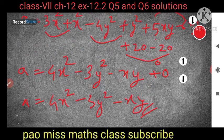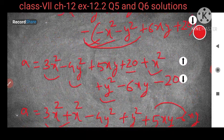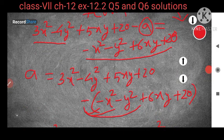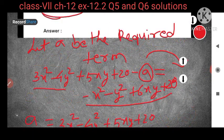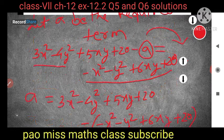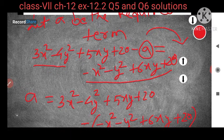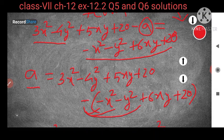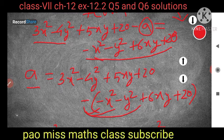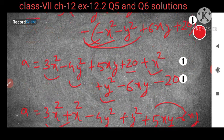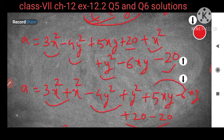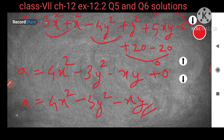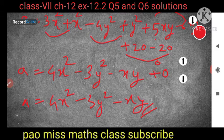Now I will show the previous one also — just you can see this. If you have not written, you can take a screenshot and write it down. So first, let a be the required term. Then from the given term you subtract a, keep a on the left hand side and the other term on the right hand side. This term becomes minus with the first expression. After that you break the bracket, then collect the like terms together and solve. So you get 4x² minus 3y² minus xy as the required answer.